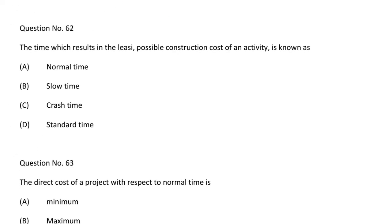Next question: the time which results in the least possible construction cost of an activity is known as — option A normal time, option B slow time, option C crash time, option D standard time. The correct answer is option B, slow time.